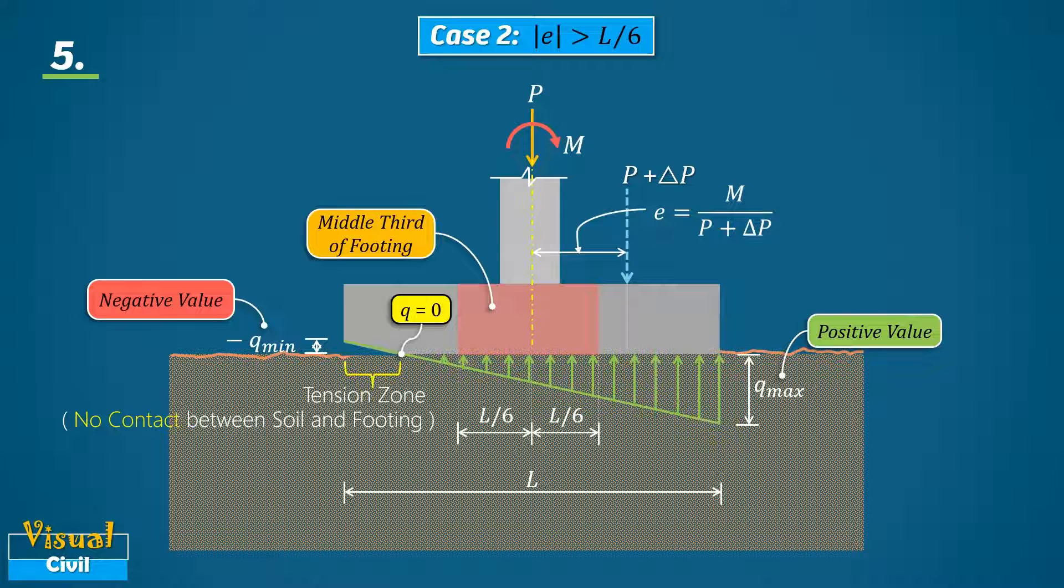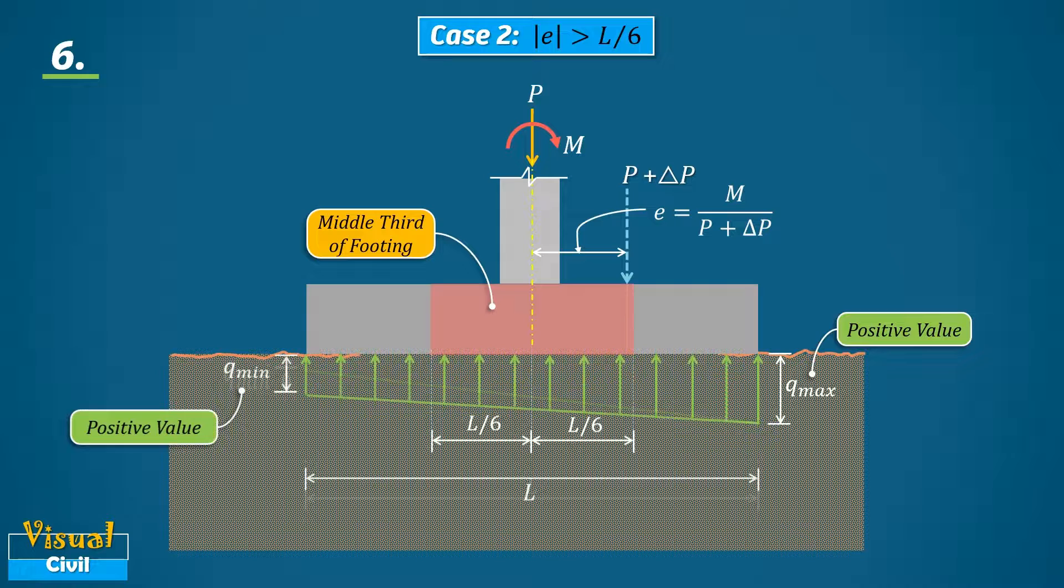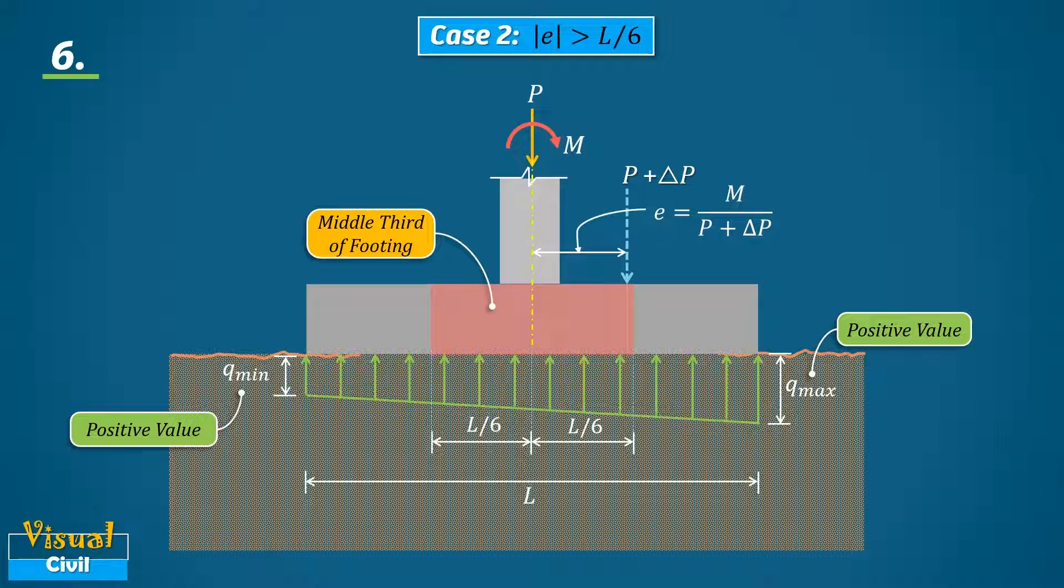Hence, to make the positive value of minimum upward pressure and to bring eccentricity within the middle third of the footing, the area of the footing needs to be increased. It is desirable to proportion the footing base such as to make the upward pressure as uniform as possible to prevent the possible tilting of the footing under sustained eccentric loads.